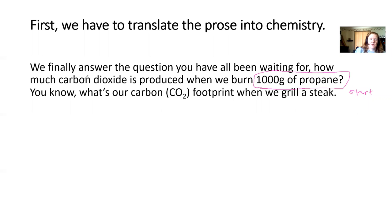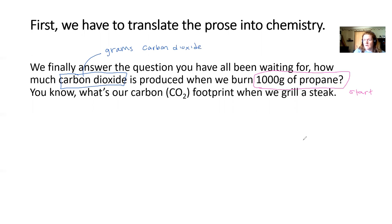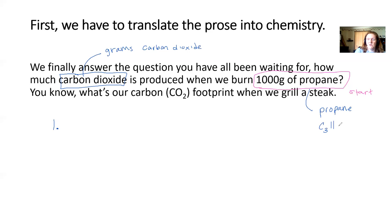We're going to figure out how many grams of carbon dioxide are produced — 'how much' usually means grams. So step one is to write a chemical equation. This is very similar to what you did in Reactions 1 and Reactions 2. Propane is not a chemical name you've learned yet, so it would be provided on a test.